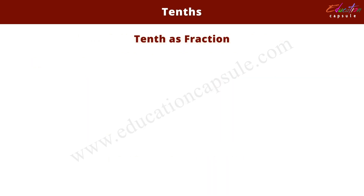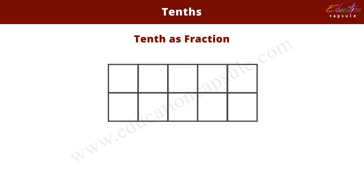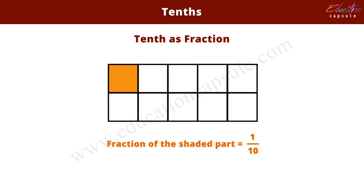Tenth as fraction. Here, a bar is split into ten equal parts. Out of ten, one part is shaded. So, the fraction of the shaded part would equal one out of ten. So, one tenth as a fraction is one out of ten.